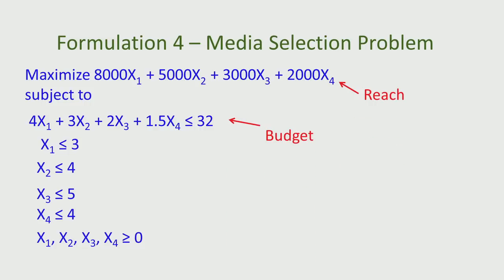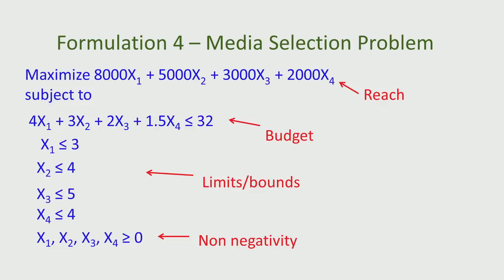We also have restrictions on the number of advertisements placed in each medium: x1 ≤ 3, x2 ≤ 4, x3 ≤ 5 and x4 ≤ 4. We also have the non-negativity restriction: x1, x2, x3, x4 ≥ 0. This completes the formulation of the media selection problem where the objective is to maximize the total reach.